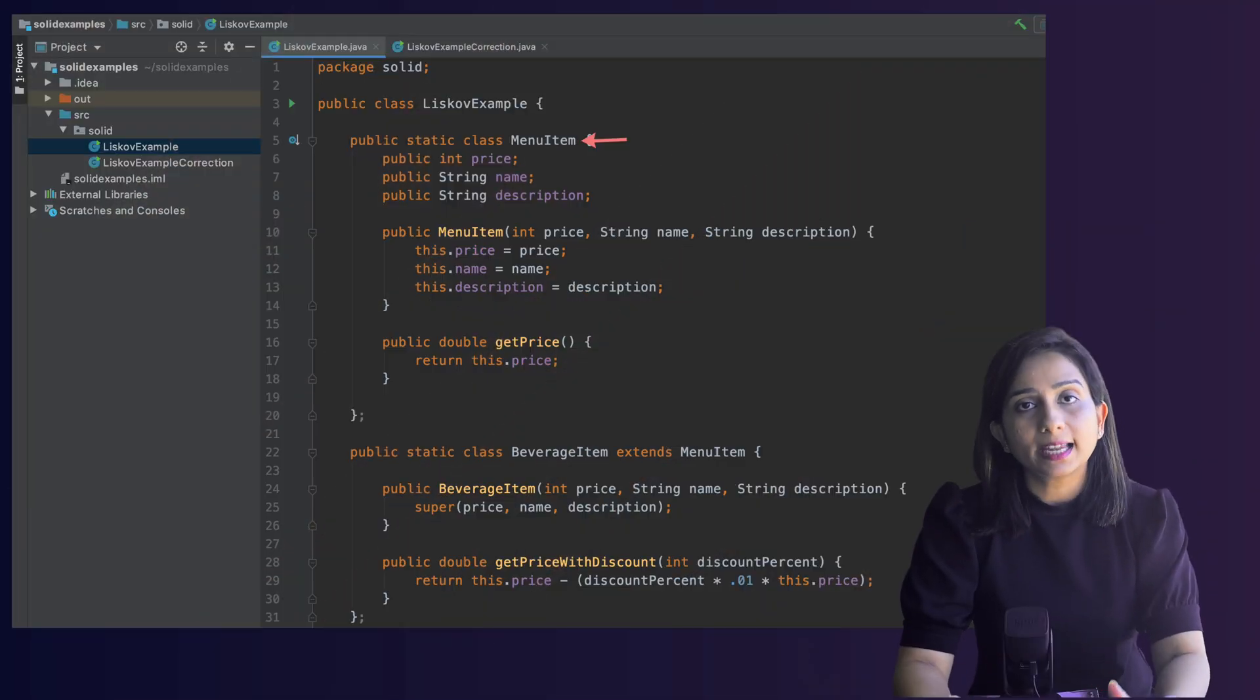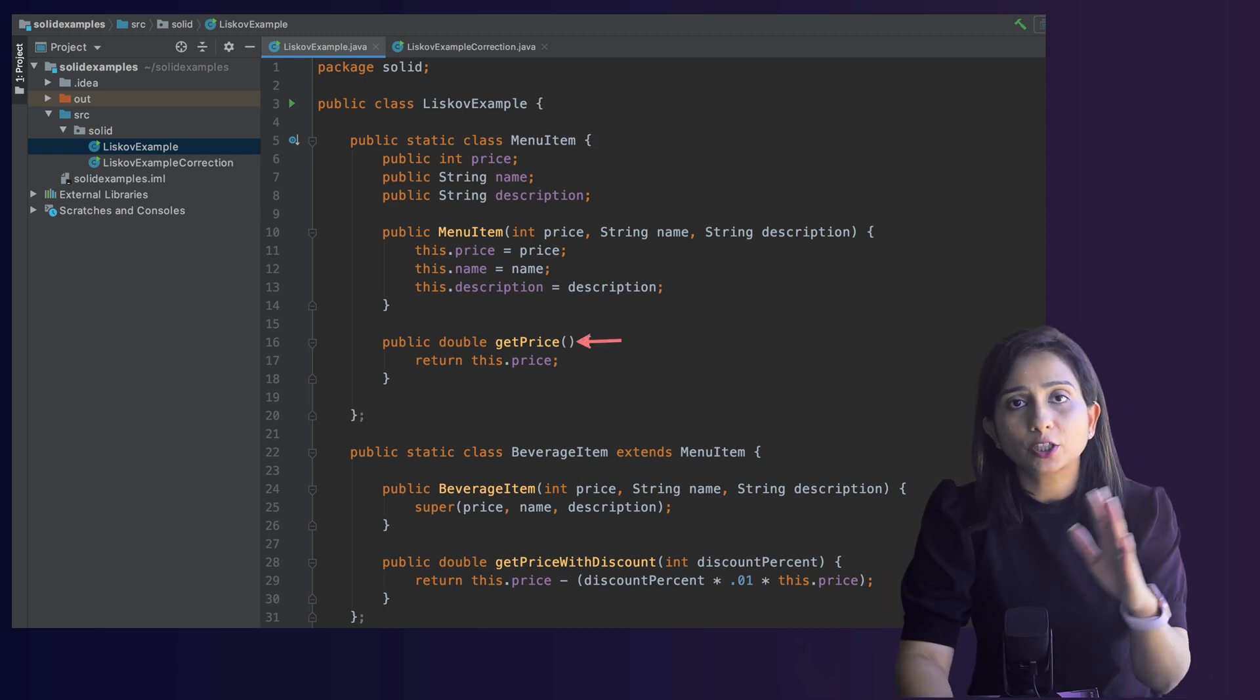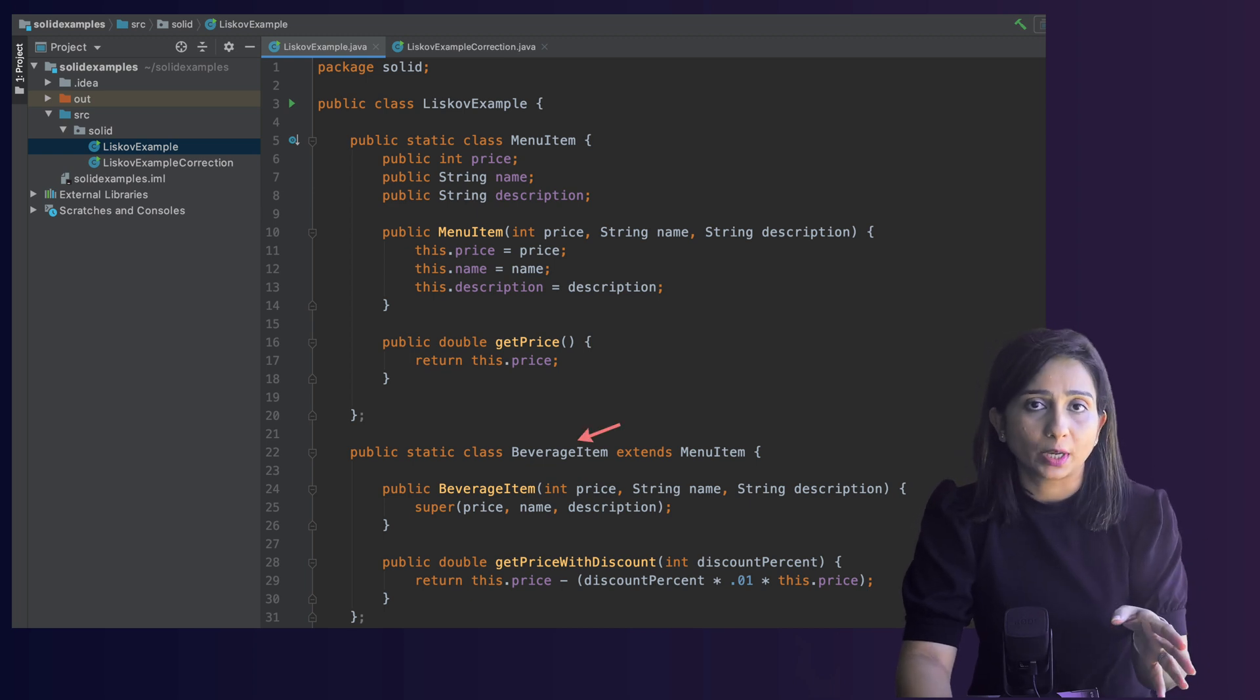Let's understand this using an example. Let's say we have a class MenuItem which describes the different items in a menu and in this class we have a function getPrice which returns us the price of that particular item. Now let's say that there are some discounts that are being offered only on beverage items, not the solid food items.